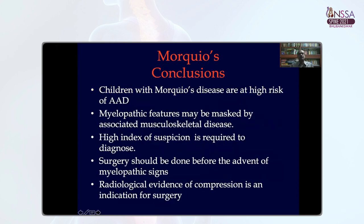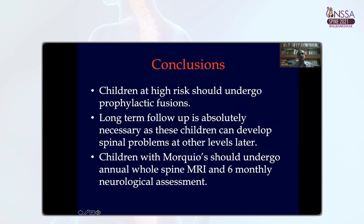In conclusion, children with Morquio Disease are at high risk of developing atlantoaxial dislocation and subsequent myelopathy. Myelopathy features may be masked by associated musculoskeletal disease, so a high index of suspicion is required. Surgery should be done when there is radiological evidence of compression, before the advent of clinical myelopathy, to achieve good results. Children at high risk should undergo prophylactic fusion, but these children should be followed lifelong — with follow-up at six-month intervals and repeat MRI at yearly intervals — because compression can develop at cervical, thoracic, or thoracolumbar levels. Thank you.